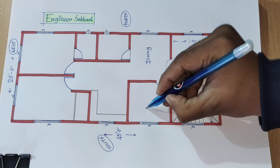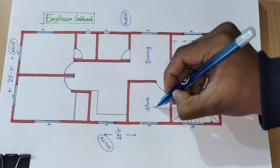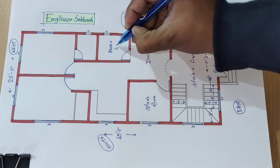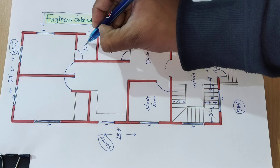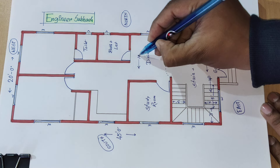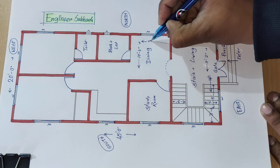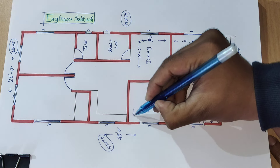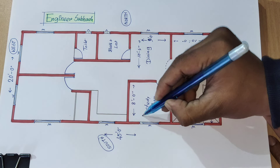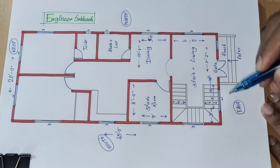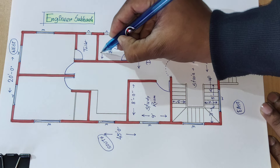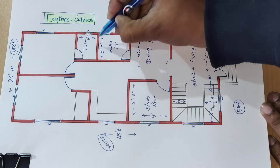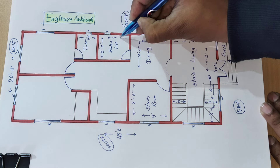Dining. Study, come bedroom. Bath plus latin. Toilet. Distance: 10 feet 4 inch. Distance: 9 feet 0 inch. Distance: 8 feet 0 inch. Distance: 9 feet. Distance: 5 feet 11 inch, 4 feet 6 inch, 7 feet.